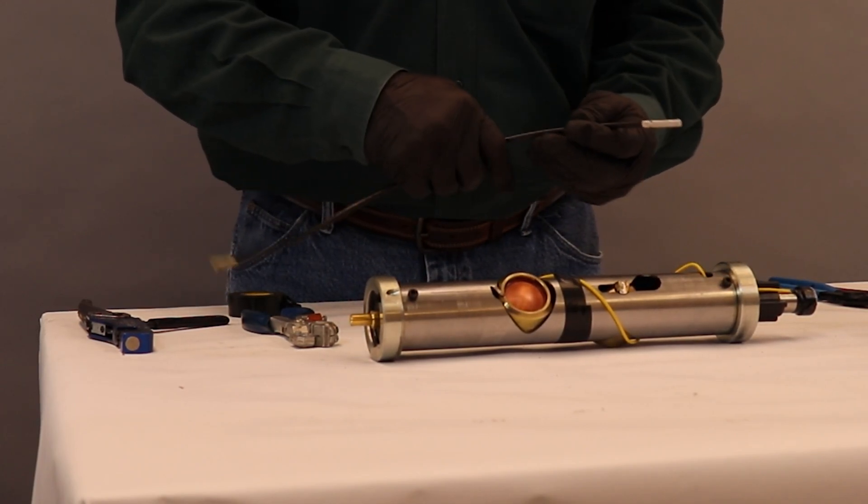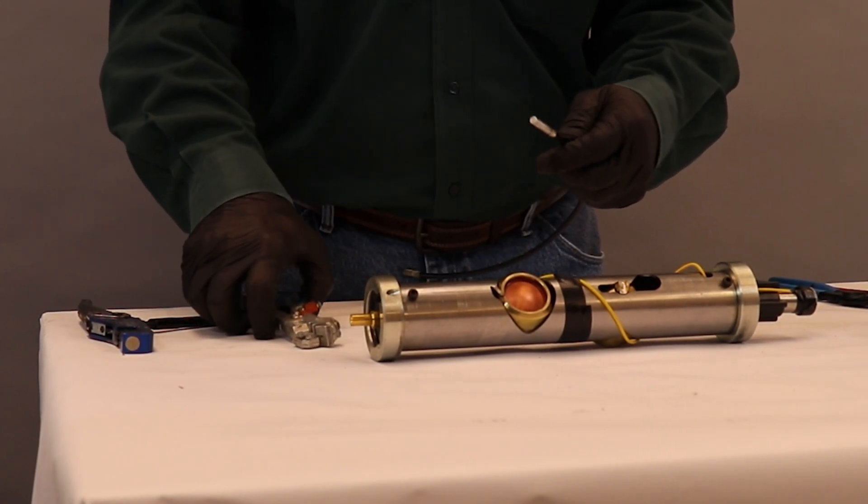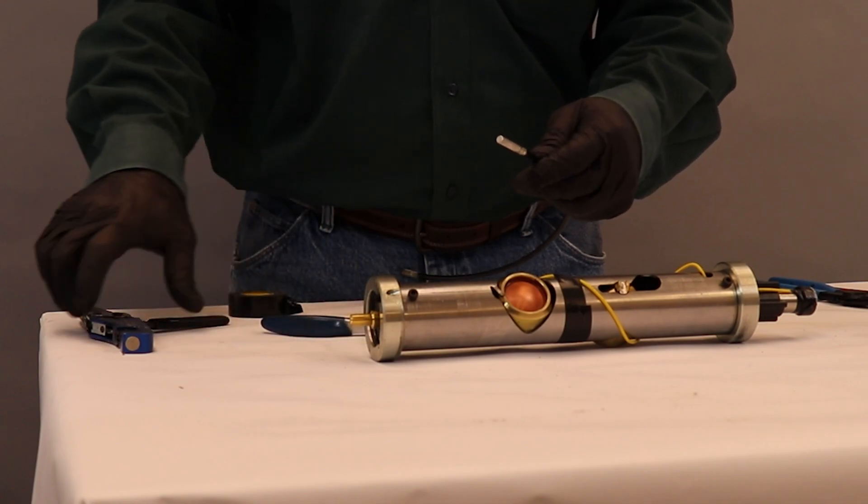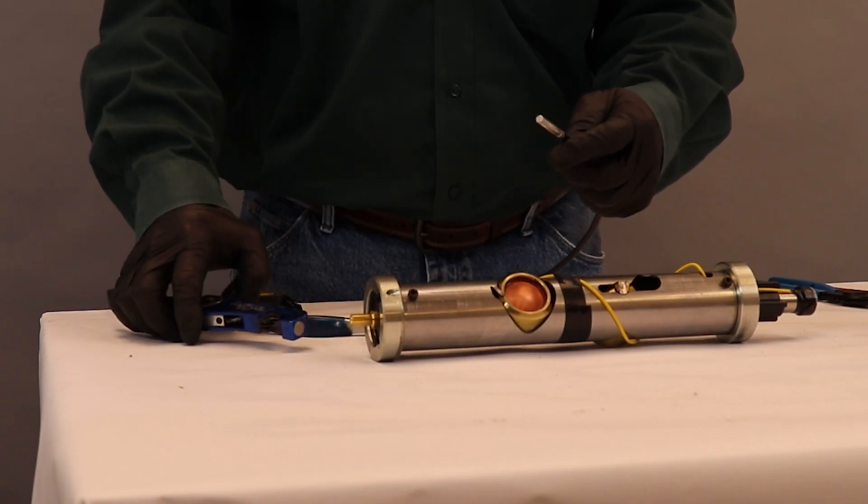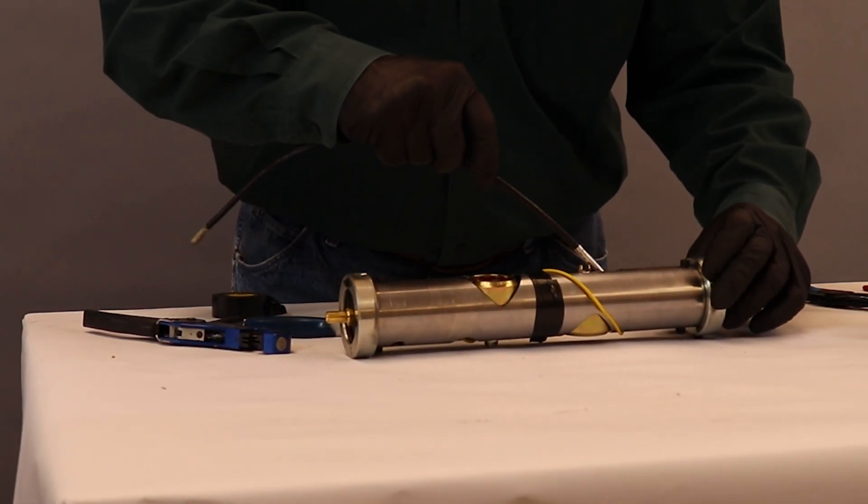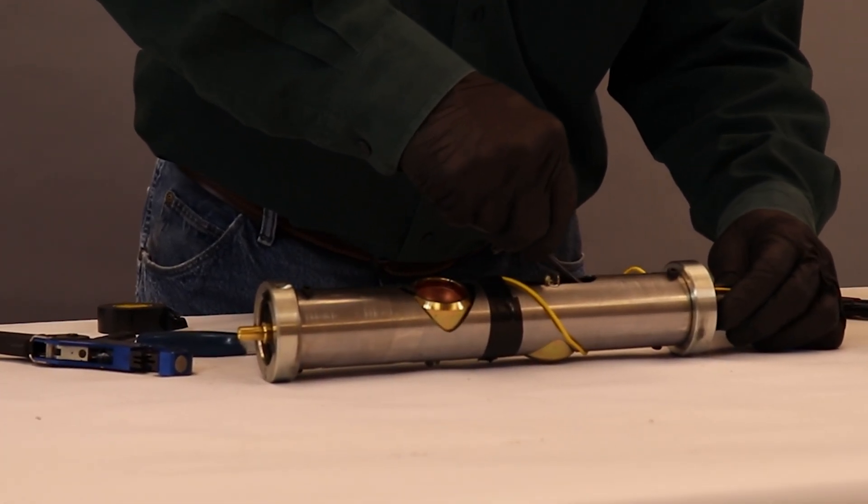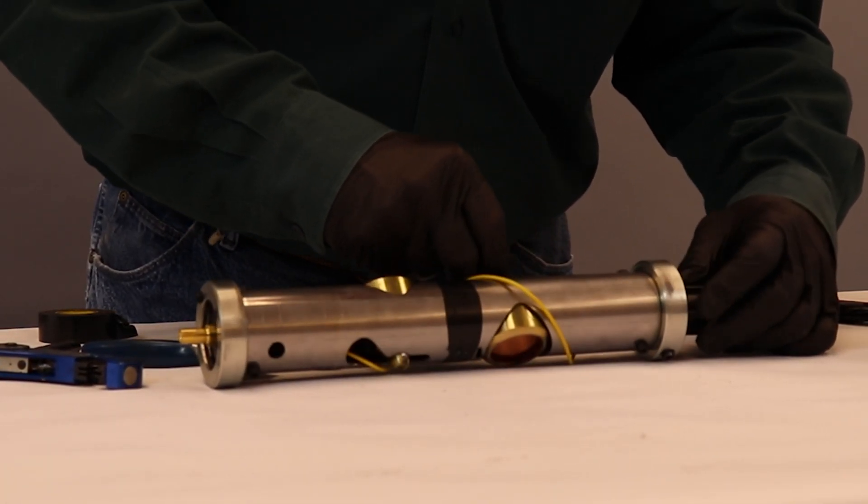The next step would be to insert your deck cord along with a booster. For our purposes, we've already cut and we've already crimped the booster onto our deck cord. We're going to insert it into our electrical connection to where we make sure that it is shouldered.